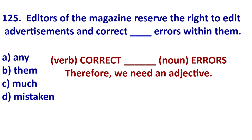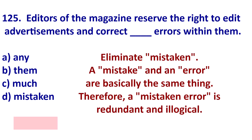So let's eliminate the wrong answers. First, eliminate 'mistaken.' It is an adjective, but it is not logical here. So it is grammatically correct, but not logical. A mistake is an error, therefore it is not logical to say 'a mistaken error.' It's like saying 'she is a beautiful beauty' — it is redundant, it's not logical.